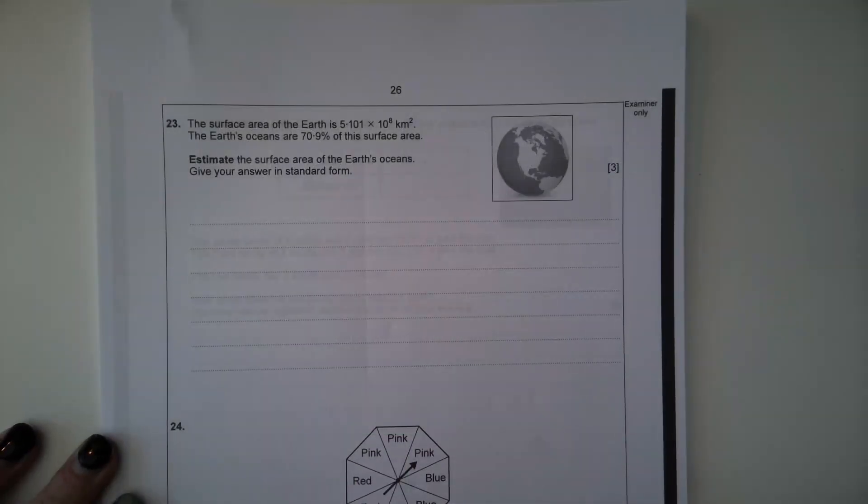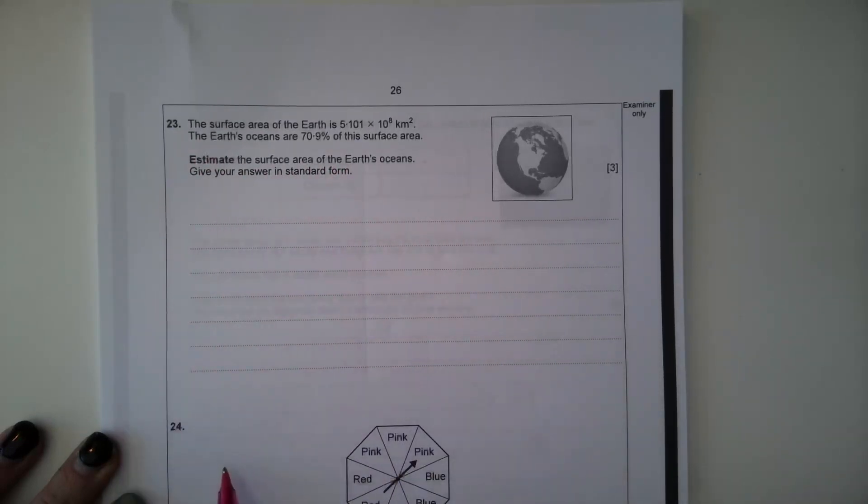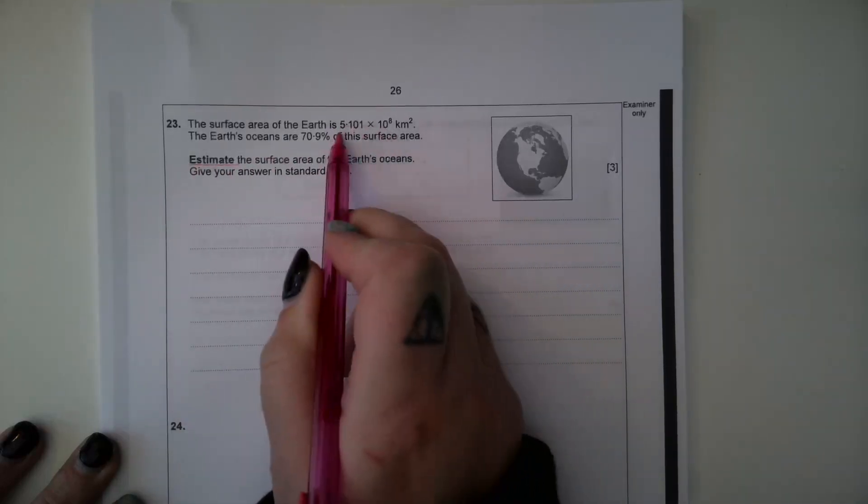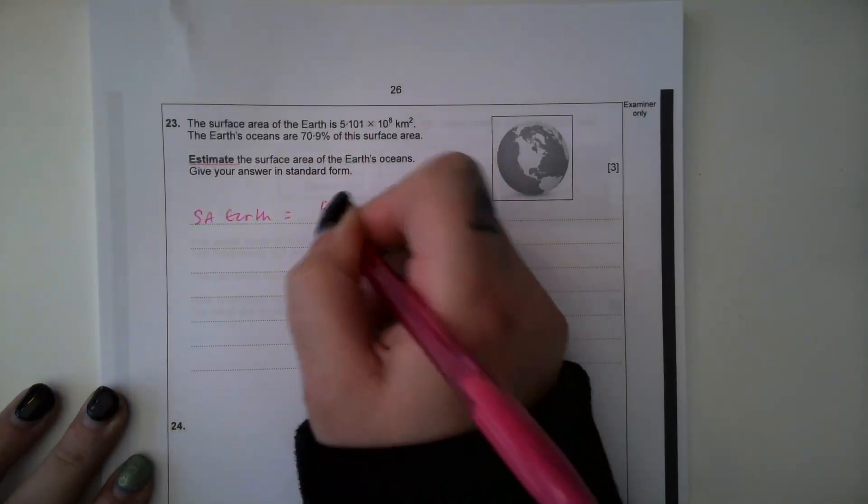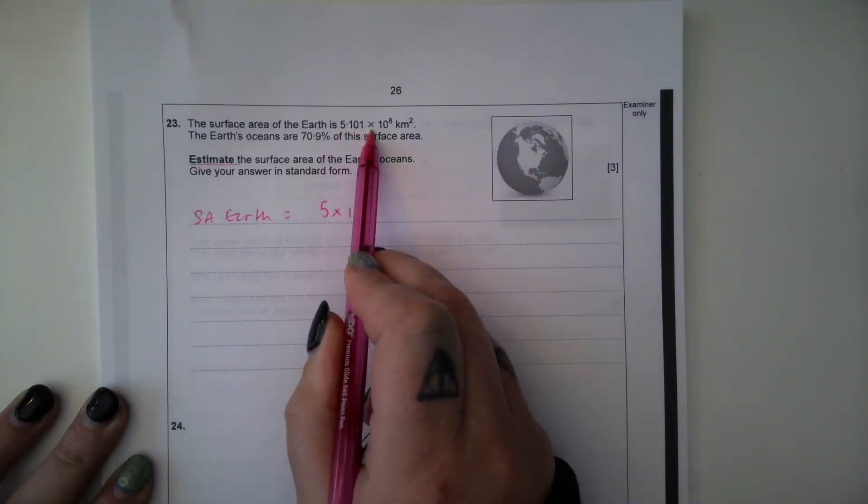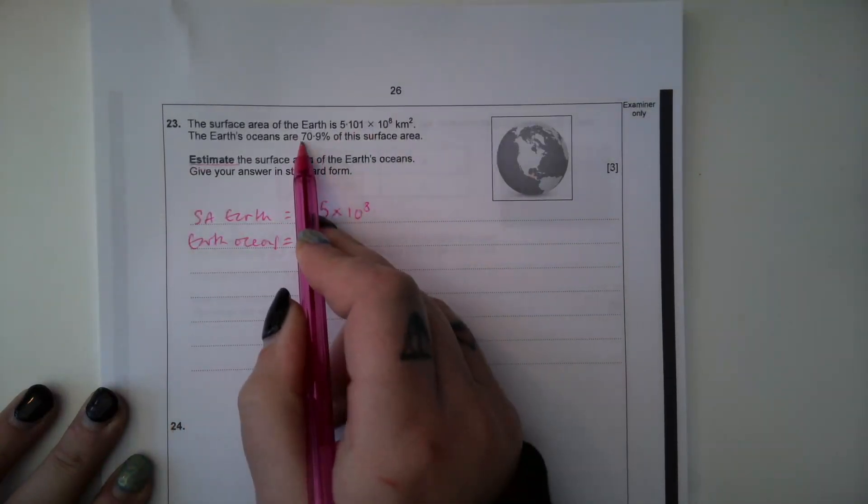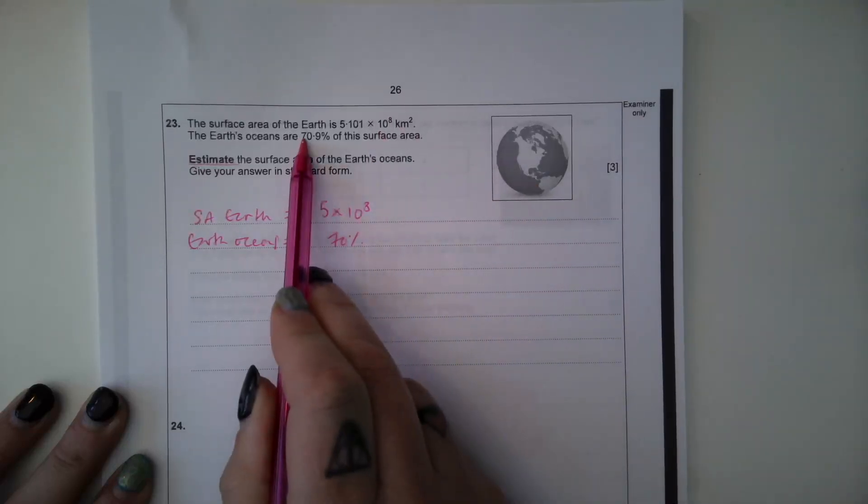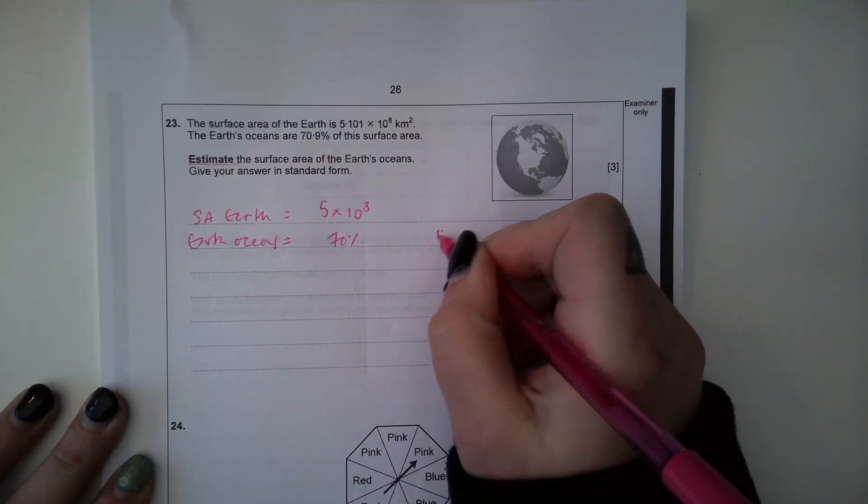Question 23, the surface area of the Earth is 5.101 times 10 to the power of 8 kilometers squared. The Earth's oceans are 70.9% of this surface area. Estimate the surface area of the Earth's oceans. Give your answer in standard form. So because we're estimating, I'm going to make these into numbers I can deal easier with. So we're going to say that surface area of Earth is 5 times 10 to the power of 8. We're rounding this 5.101 to 1 significant figure. And then the Earth's oceans, we'll say, are 70%.